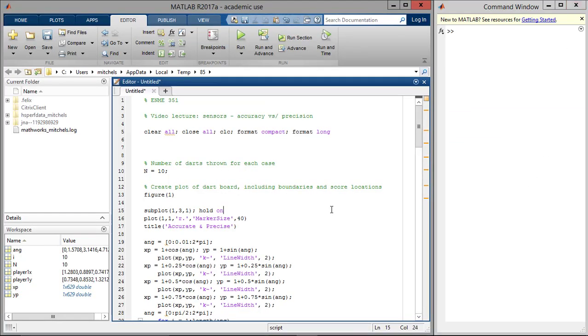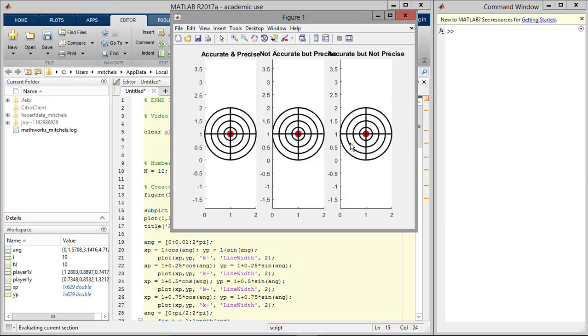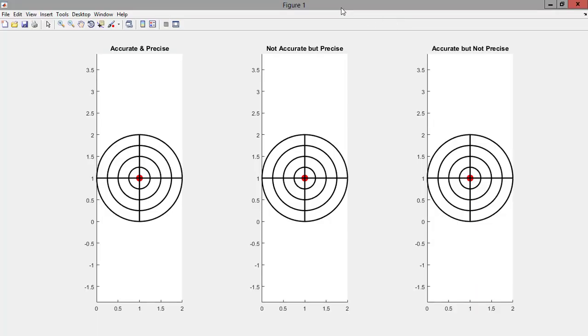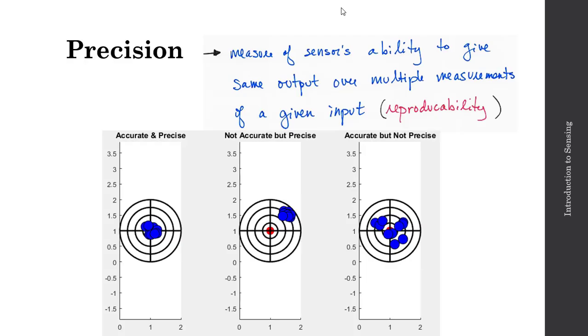So let's run that one more time and take a look at these three cases. At left here, we have accurate and precise. At right, we have an analogy for a sensor that's not accurate, but very precise. And then case three here, we have an analogy of a sensor that is accurate, but not precise. And so it's important that we properly understand and digest the difference between accuracy and precision when evaluating sensor metrics.